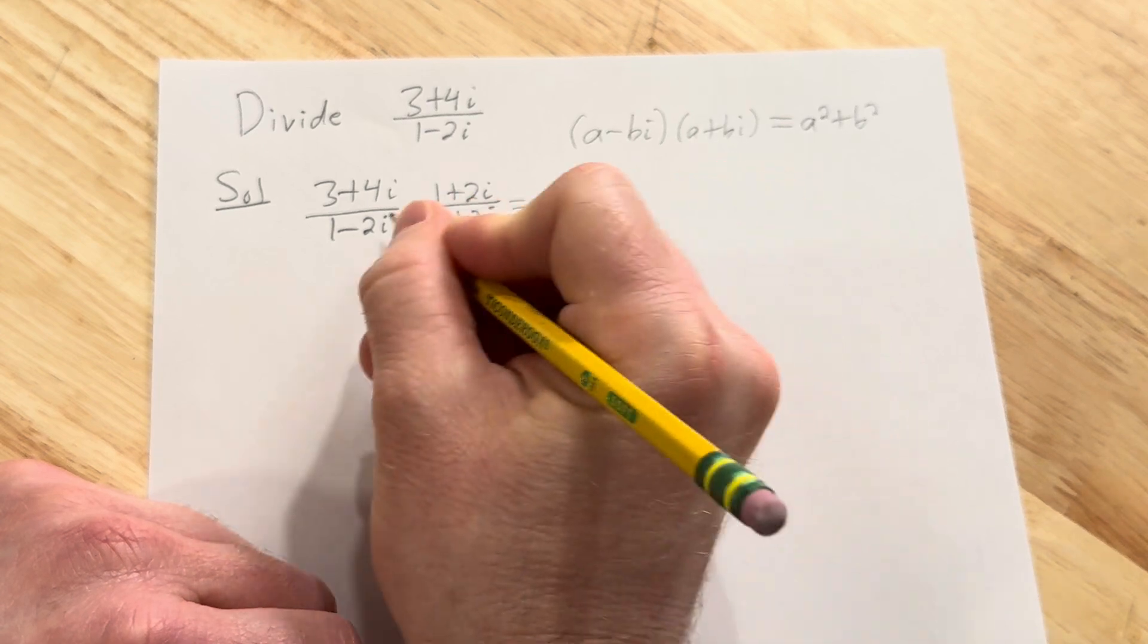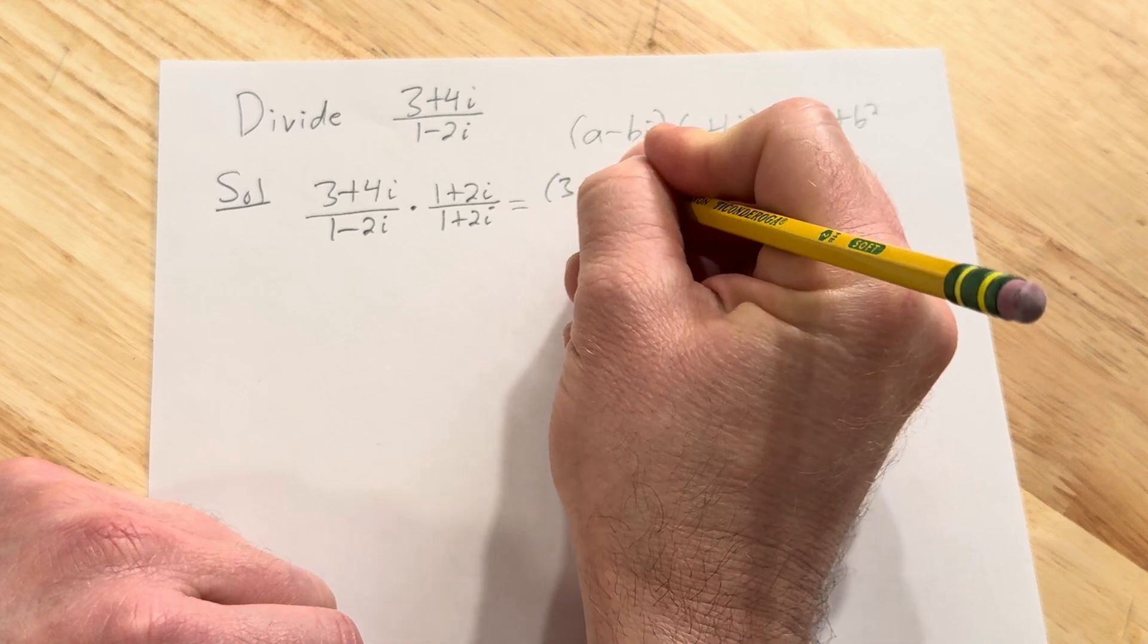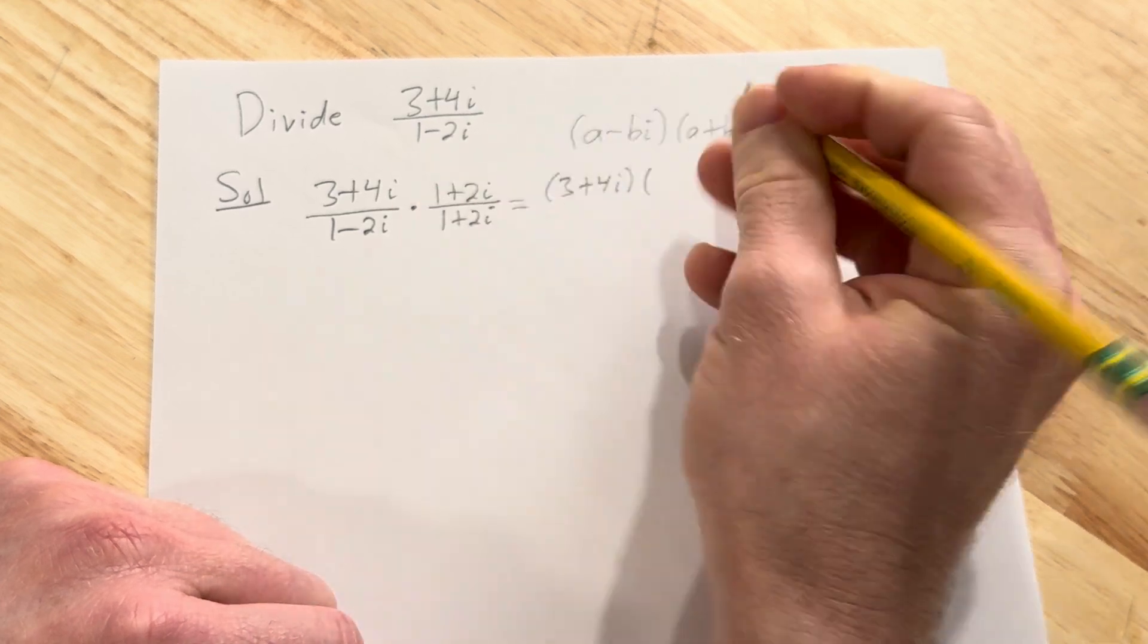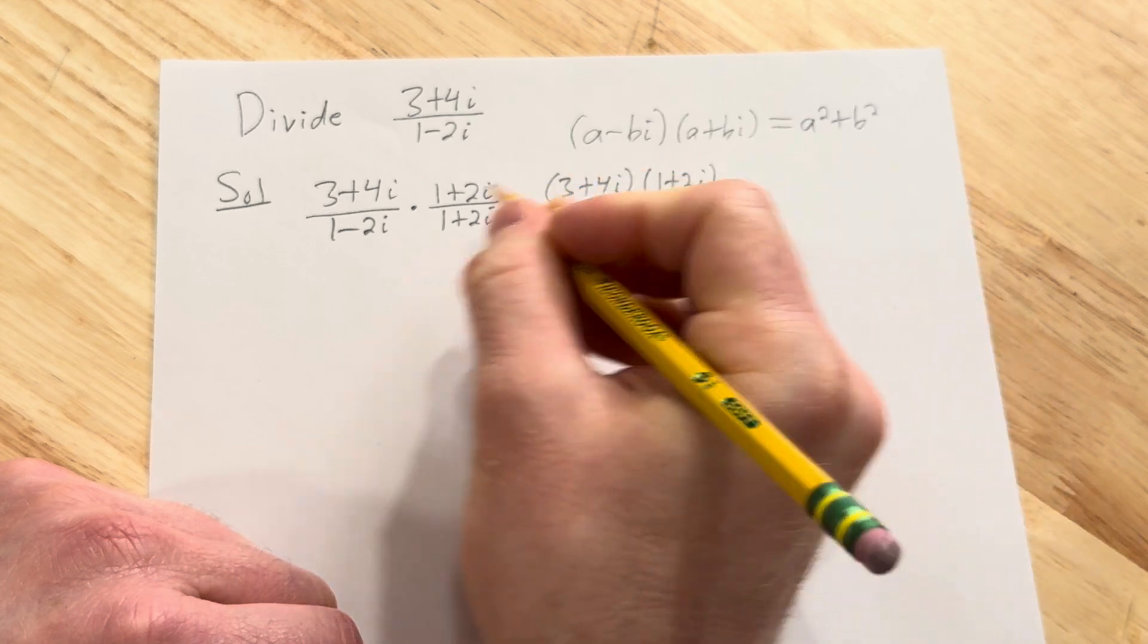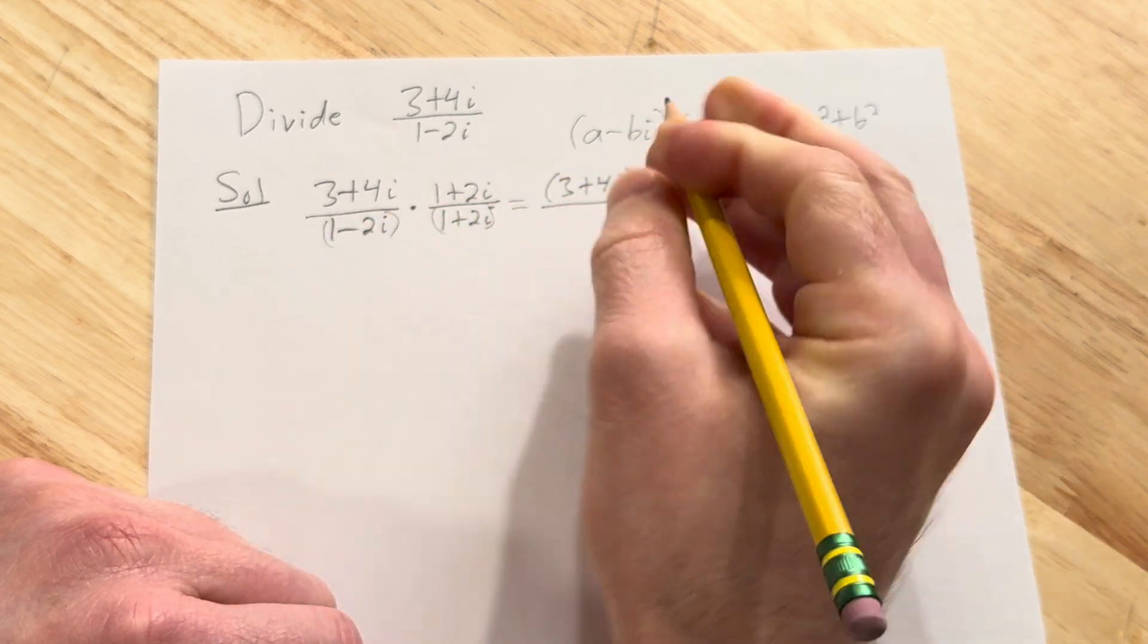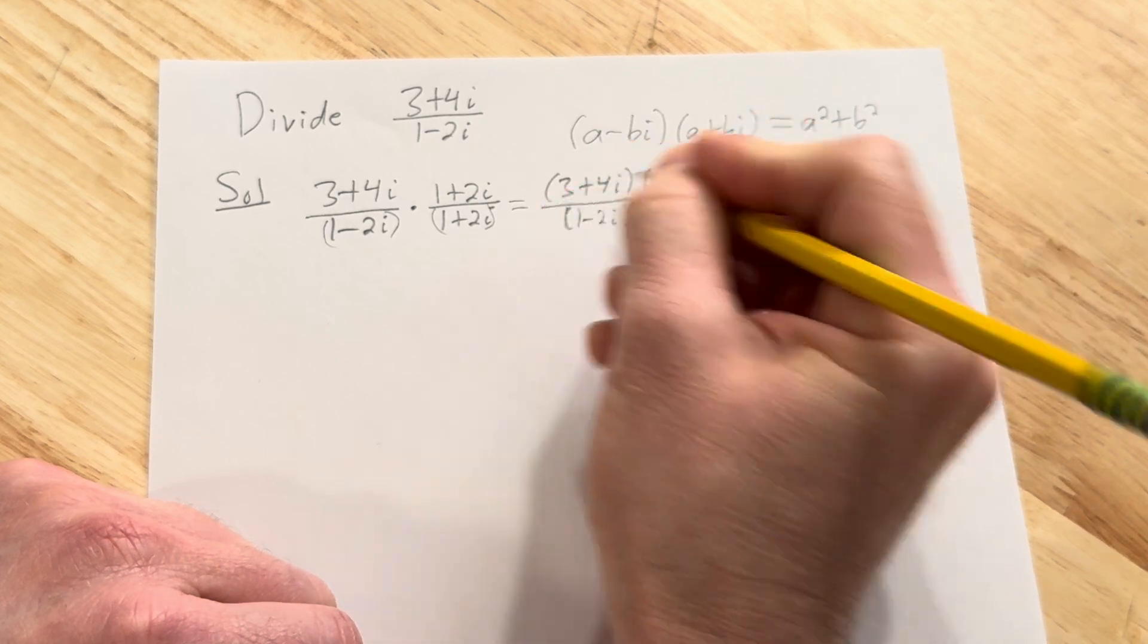So this is equal to... So in the numerator I'm just going to write it again: 3 plus 4i times 1 plus 2i over... And on the bottom, I'll write it again: 1 minus 2i times 1 plus 2i. So you see now it's all under one fraction.